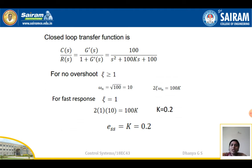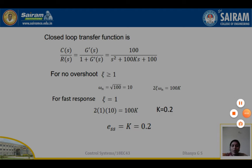The closed loop transfer function C(s)/R(s) = G'(s)/(1+G'(s)) = 100 / (s² + 100ks + 100). For no overshoot, ζ ≥ 1. Comparing with the standard second order equation, ωn = √100 = 10 and 2ζωn = 100k. For fastest response, ζ = 1, so 2·1·10 = 100k, giving k = 0.2. Therefore, e(s) = k = 0.2.